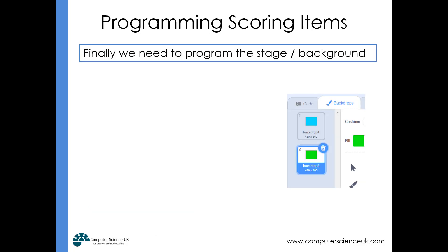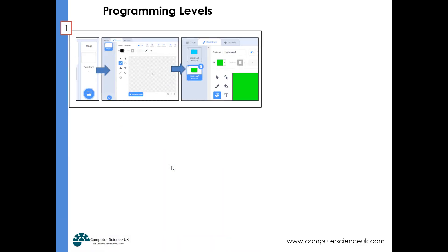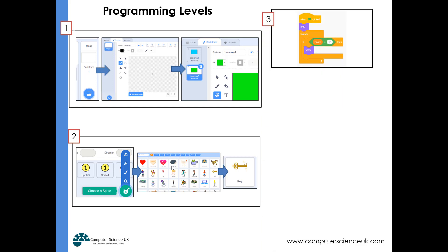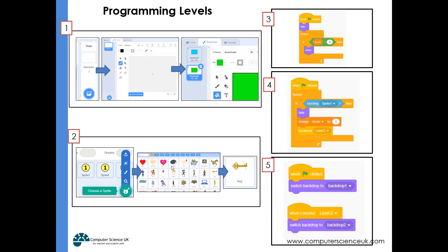We program the stage to respond accordingly: when we click the green flag we switch to backdrop 1 (level one), and when we receive the level 2 broadcast we switch the backdrop to level 2, changing the background at the right time. To summarize: create the background, create the end-of-level item, program it to be hidden until a certain score occurs, then program it to interact with the main character so it can hide, the score goes up by one, and the message is broadcast. The stage then changes backdrop when that broadcast message is received.